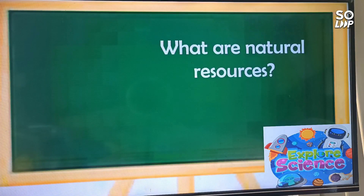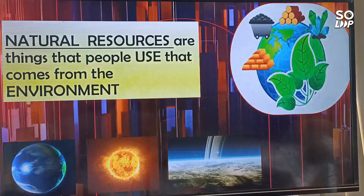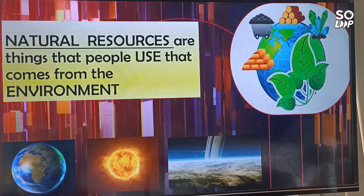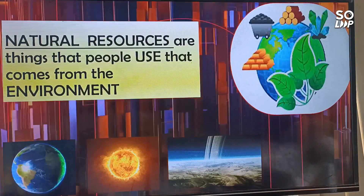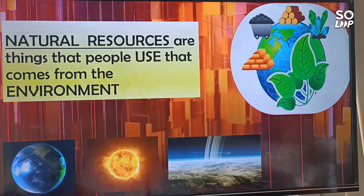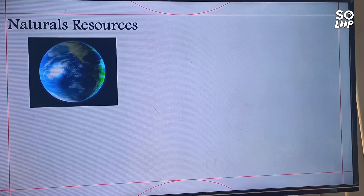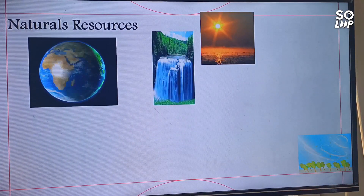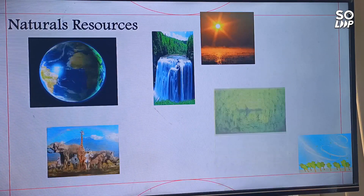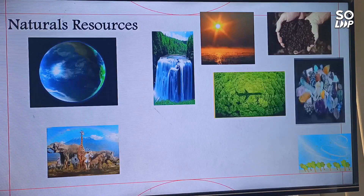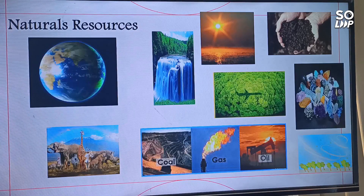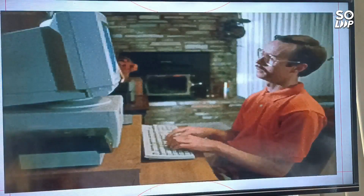Now, what are natural resources? Natural resources are things that people use that come from the environment. They come from the earth, sun, and atmosphere. Examples of earth's natural resources include light, air, water, animals, plants, soil, minerals, and fossil fuels. Many of these resources are changed into products that make our life more comfortable and more convenient.